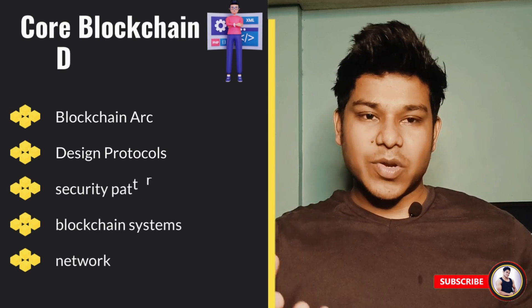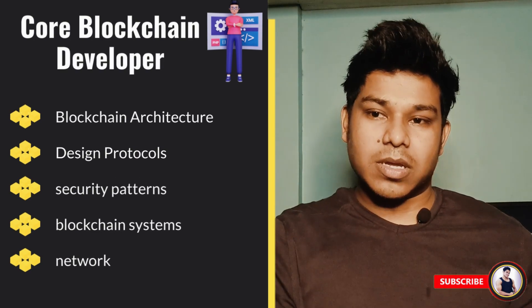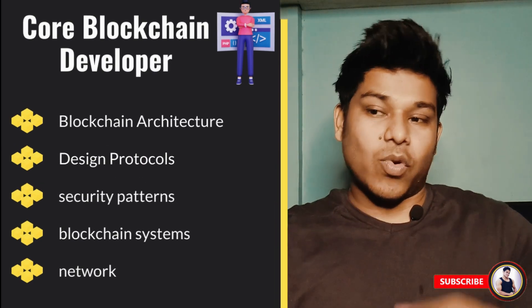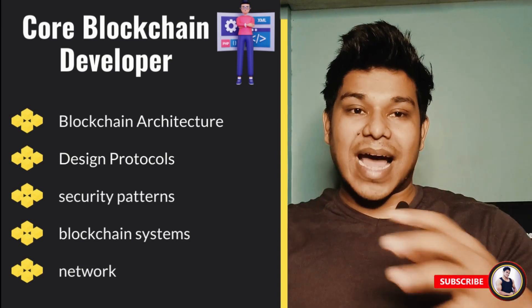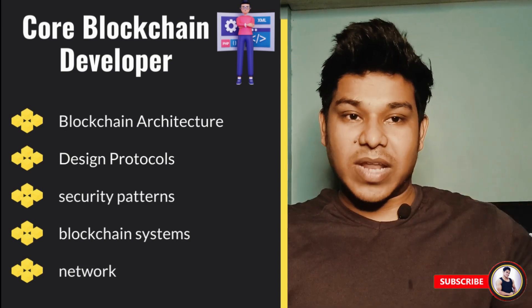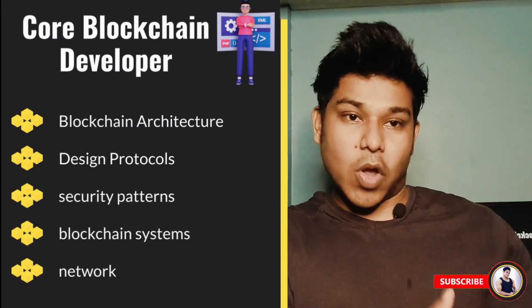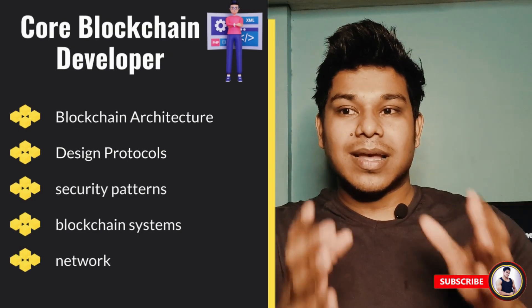The core blockchain developer works on the architecture of the blockchain — how the protocol will behave, what consensus layer it will follow, how hashes are generated, how transactions happen, and how the validation process works. It's nothing related to front-end or back-end; they work on the protocol layer. Networks like Polygon, Solana, and Ethereum were built by core blockchain developers.